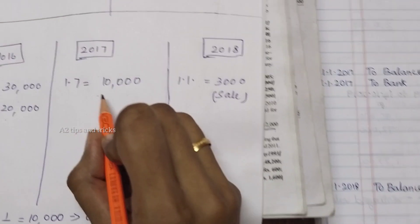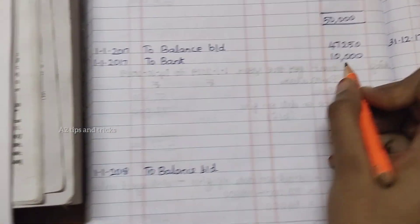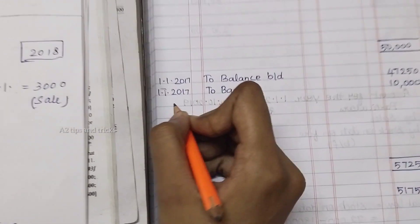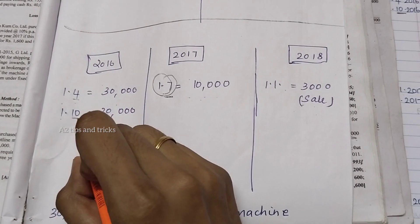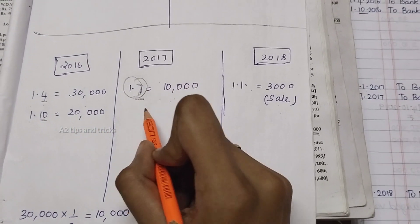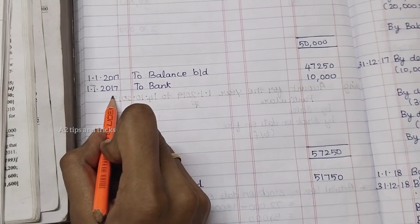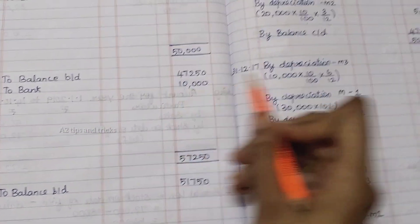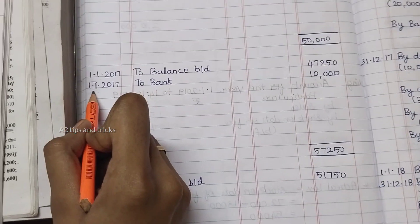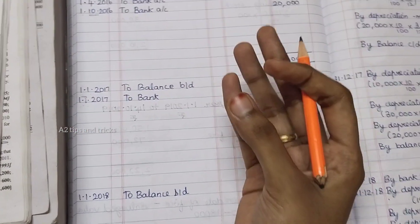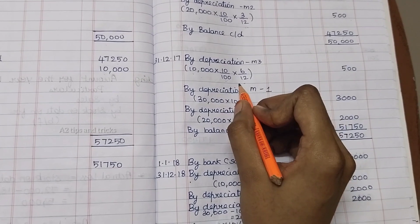Next, 2017 — what do we do? We purchased new machinery of 10,000 on 1st July, so 6 months remain: July, August, September, October, November, December — that is 6 by 12. So 10,000 into 10% into 6 by 12, we get 500.